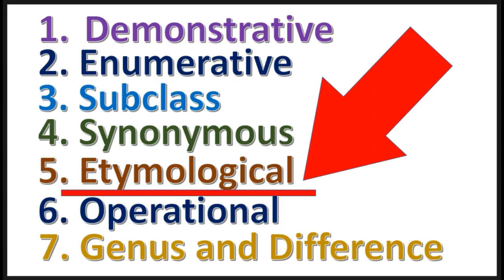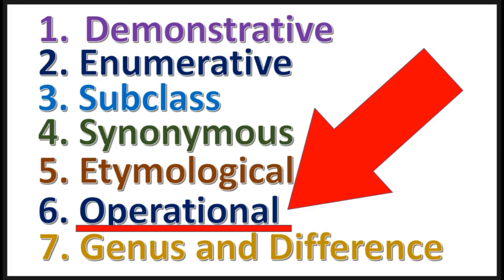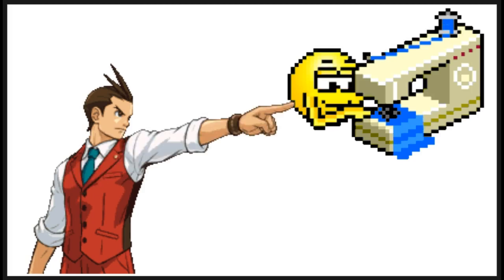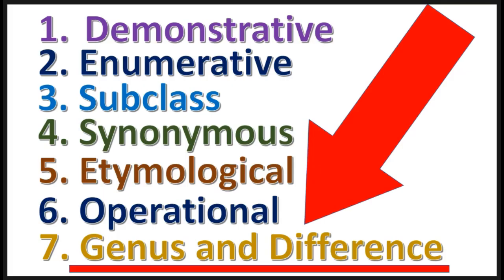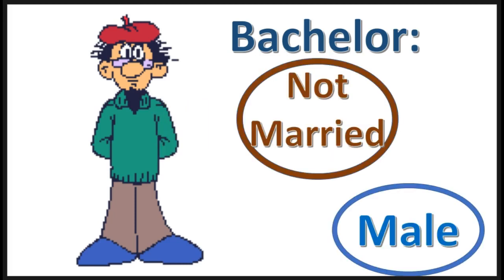The etymological definition is when you tell the ancestry of the word being defined. Here is an example. The operational definition is when you tell of a procedure which helps define the word. And last, the genus and difference definition is when you provide the genus of the same word being defined, and then provide words that make it different, more specific.